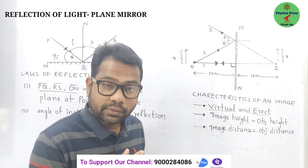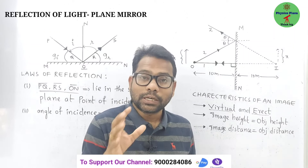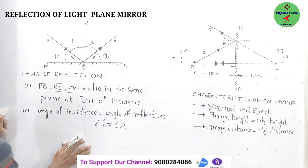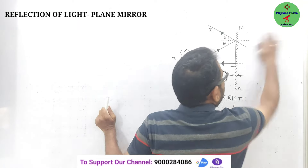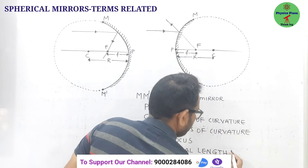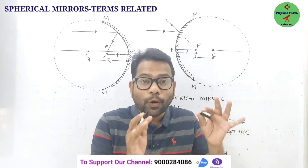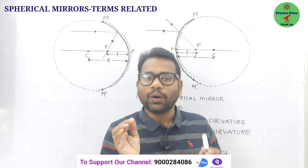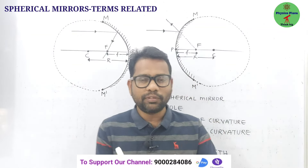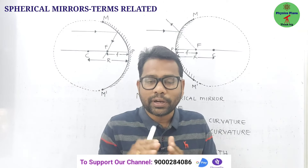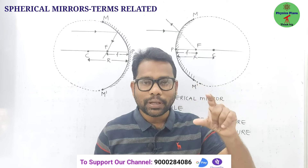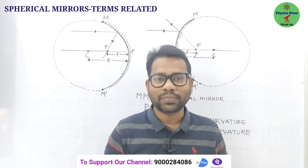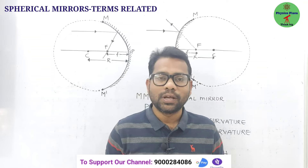Now we discuss spherical mirrors — their types, related terms, and how to make ray diagrams. Spherical mirrors are mirrors whose reflecting surface is curved. The difference between a plane mirror and a spherical mirror is in the nature of the reflecting surface: plane for a plane mirror, curved for a spherical mirror. We have two types: concave spherical mirror and convex spherical mirror.